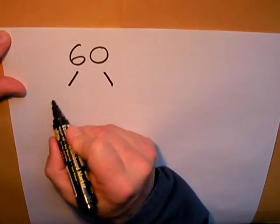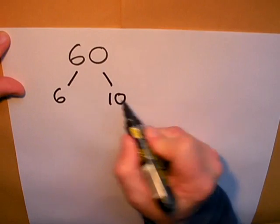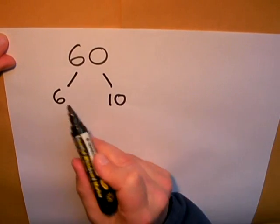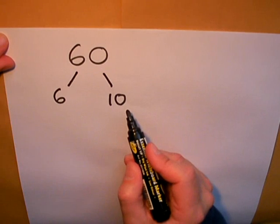Now the obvious two numbers are 6 and 10. But these aren't the prime factors. These are two factors of 60, but they aren't prime numbers.